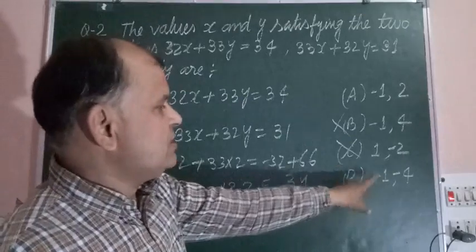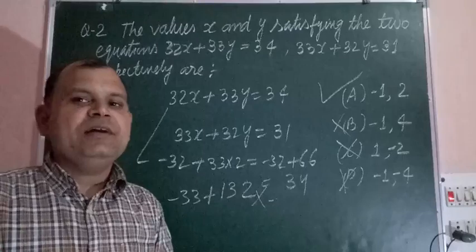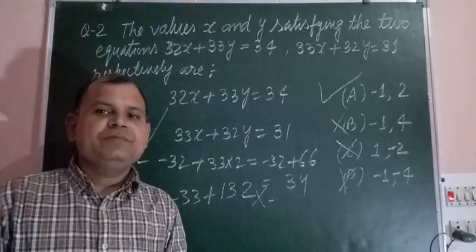When we check the remaining option, this is also not satisfied. So the answer to this question is A, which is minus 1 and 2. I hope you got it. Thanks for watching.